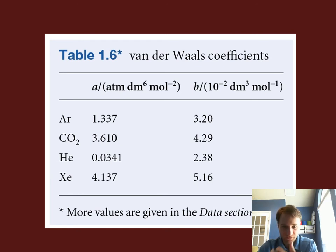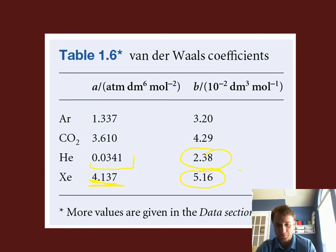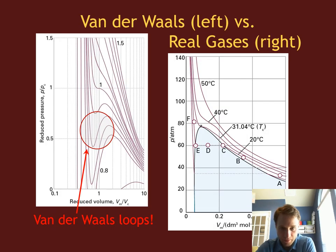The constant a is related to the effective volume, so for larger molecules like xenon, a is much larger than for smaller molecules like helium. The constant b has to do with the intermolecular forces and the strength of those forces. All of these molecules and atoms have dispersion forces, and xenon has the largest dispersion forces, so it has the largest value of b, while helium has the smallest dispersion interactions and the smallest value of b. All these values of a and b are determined through experiments.